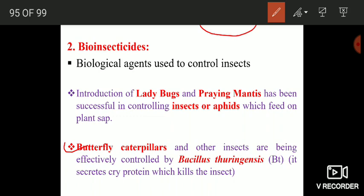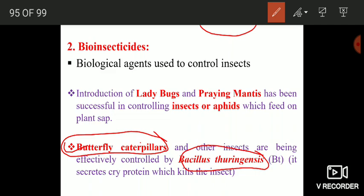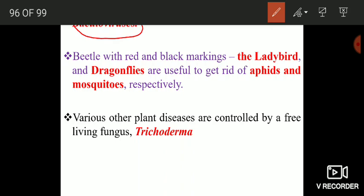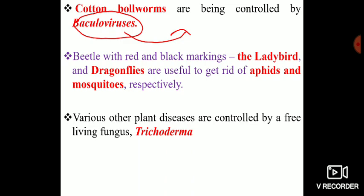Butterfly caterpillars and other insects that damage crops can be effectively controlled by Bacillus thuringiensis. This bacterium creates a Cry protein, and once the caterpillar ingests the Cry protein, it damages the epithelial cells of the caterpillar's gut and causes its death. Cotton bollworms are effectively controlled by baculoviruses, a group of viruses that are target-specific — they only affect cotton bollworms and do not affect beneficial insects.